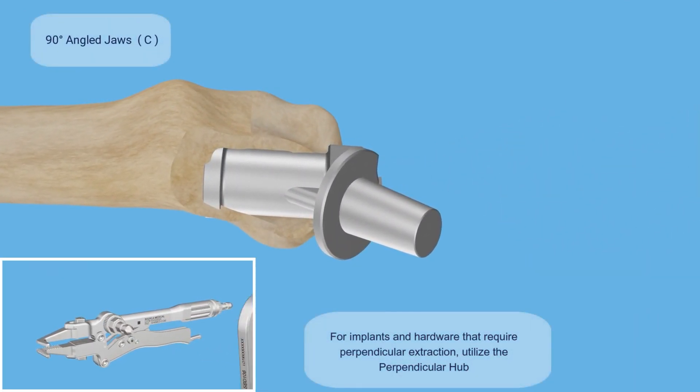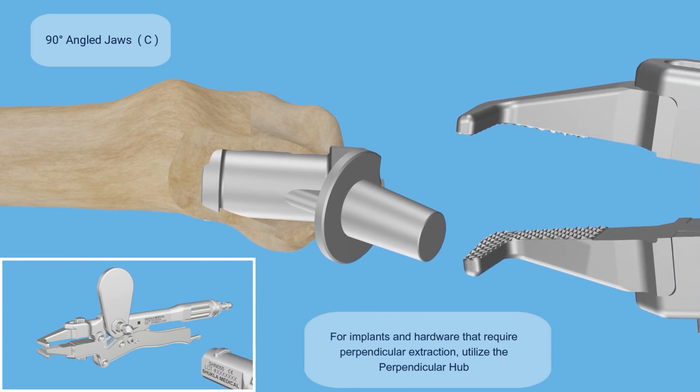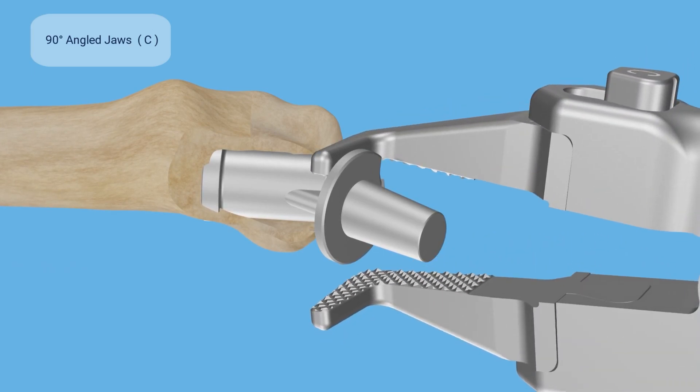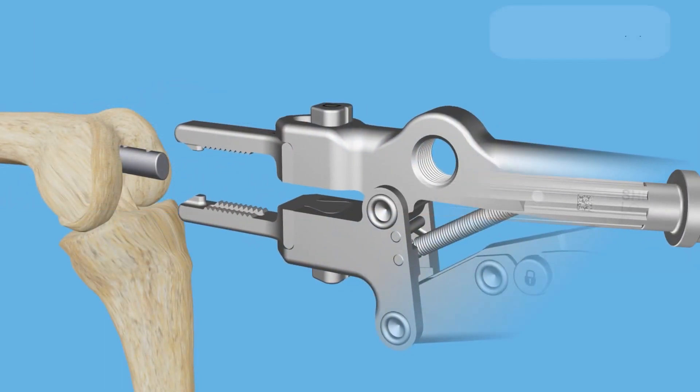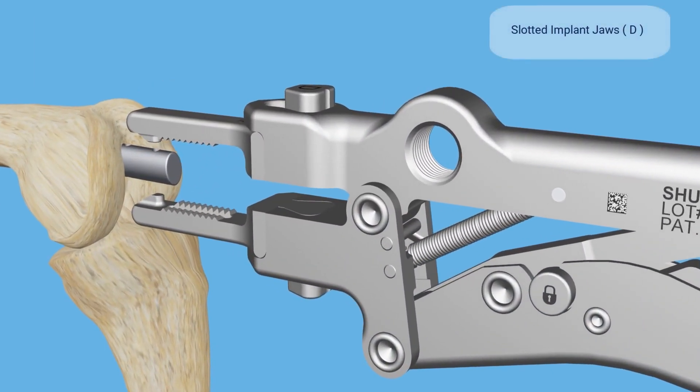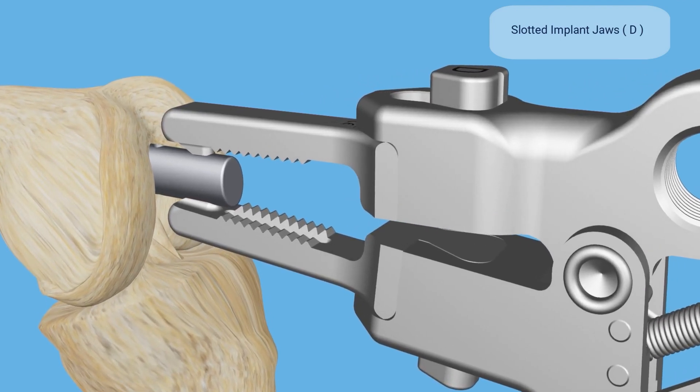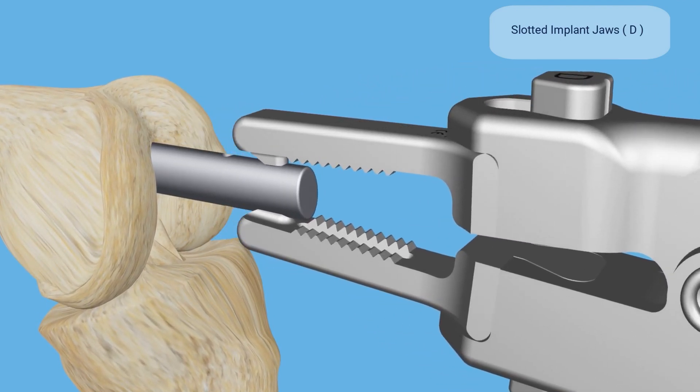The 90 degree angle jaws can be used to remove a variety of implants such as collared hip stems or hard to reach areas. The slotted implant jaws remove implants with accessible slots like IM nails or hip stems.